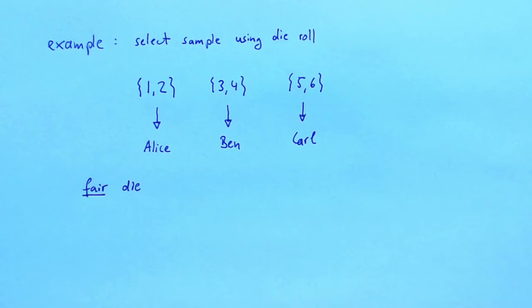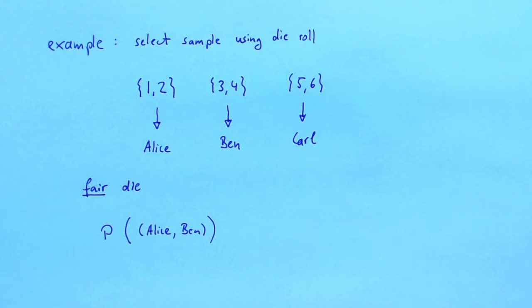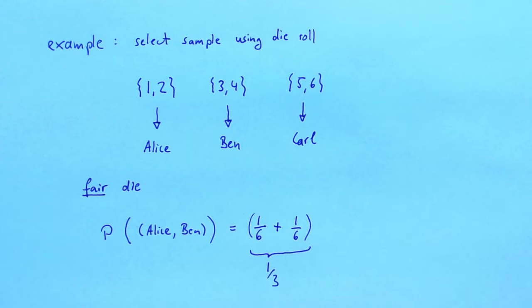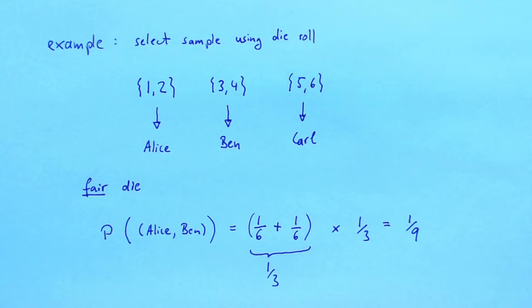We assume we are using a fair die so that all six faces have equal probability. What is the probability of selecting the sample Alice Ben? To select Alice, we have to roll either a one, which happens with probability one over six, or a two, which also happens with probability one over six — so that's a total probability of one third. To select Ben at the second stage, we have to roll either a three or four, which again happens with probability one third. To get the joint probability of selecting first Alice and then Ben, we multiply probabilities: one third times one third equals one ninth. So the probability function evaluated on the sample Alice Ben gives a probability of one ninth.